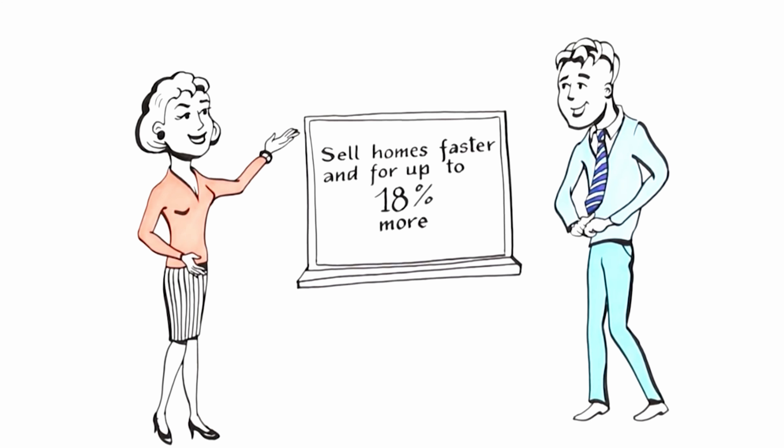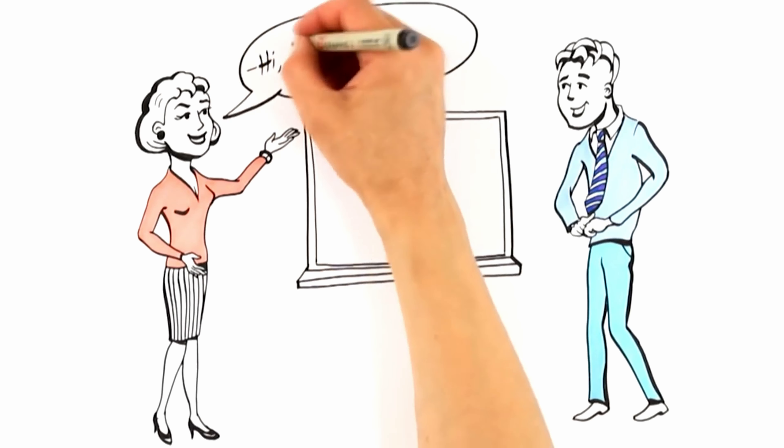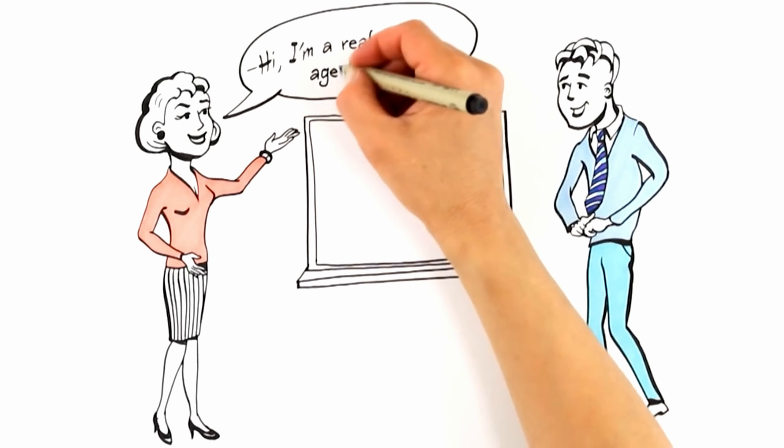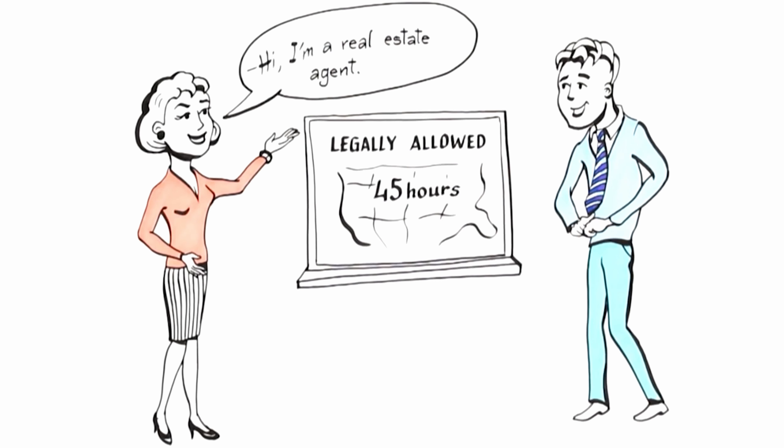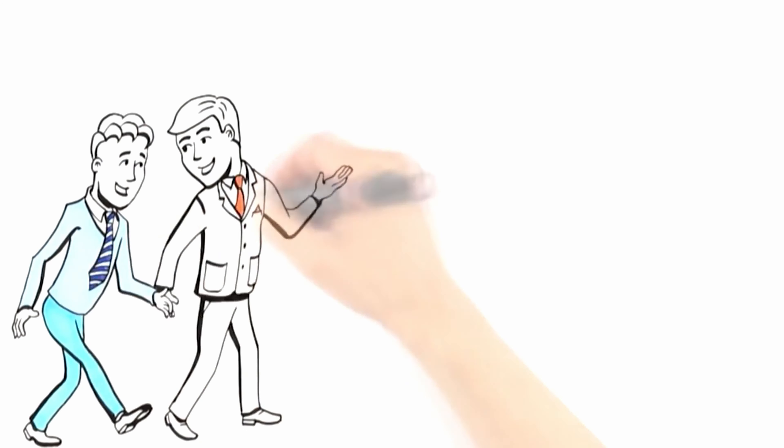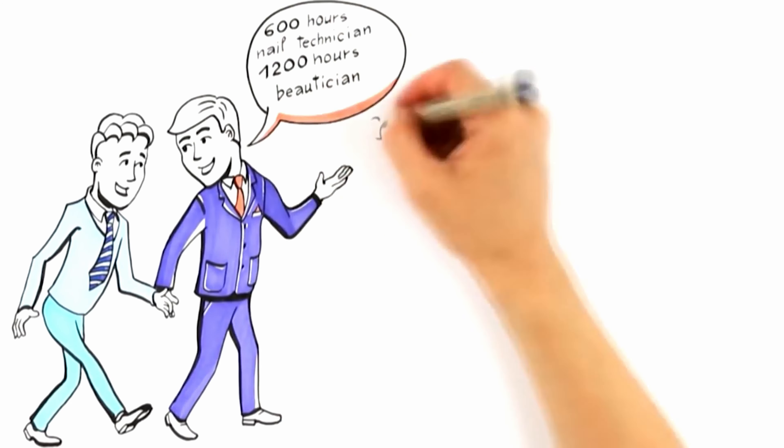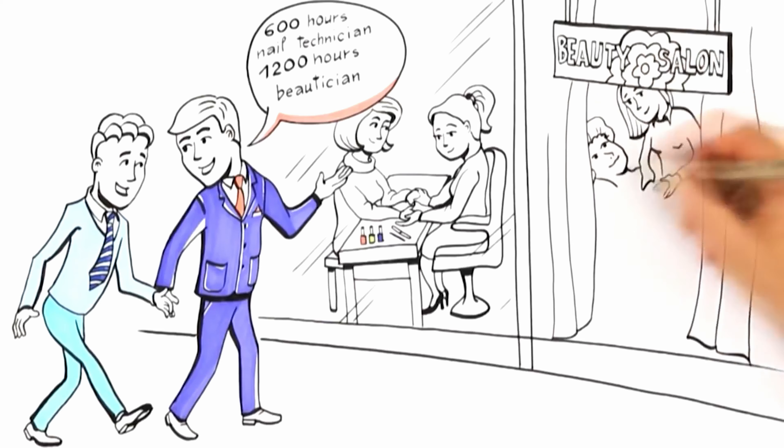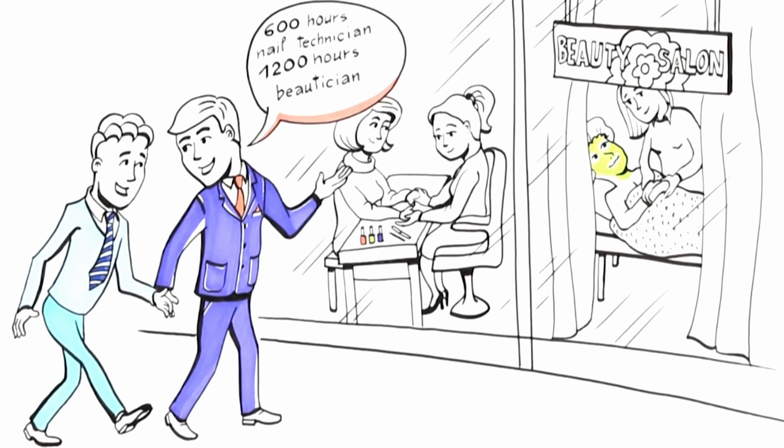As you probably know, finding an expert qualified to sell your home can be a daunting task. See, in most states, with just 45 hours of classroom time and a state exam, anyone can call themselves a real estate agent, and they are legally allowed to direct the largest financial decision in your life. Compare this to other licensed occupations, where it takes 600 hours to be a licensed nail technician or 1,200 hours to be a licensed beautician. It's easy to see why traditional agents are poorly prepared to serve your needs.